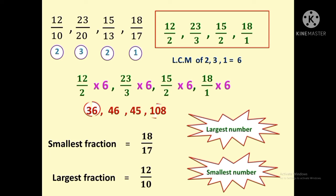So the largest fraction is 12 by 10. To summarize the Type 2 trick: change the denominator of each fraction to its corresponding difference, then find the LCM of the new denominators and convert each fraction into a number. The largest number corresponds to the smallest fraction, and the smallest number corresponds to the largest fraction. Let us solve one more problem of this type to get a clearer idea.